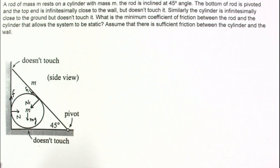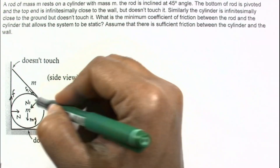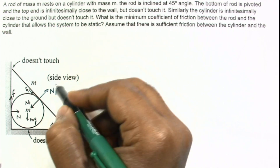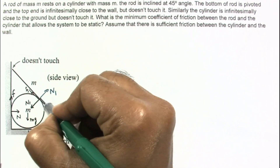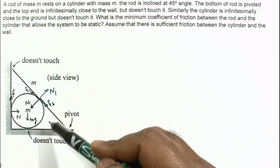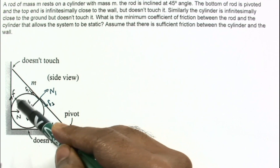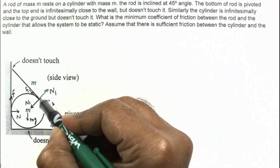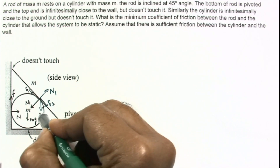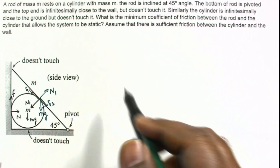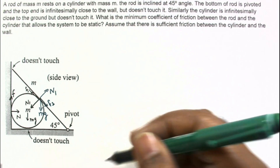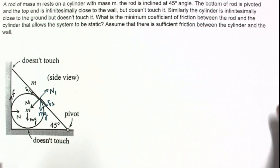Now let us make the free body diagram of the rod. On the rod, the reaction pair gives N1 and F1 at the contact point. From symmetry of the diagram, we can see this is an isosceles right triangle and the cylinder is its incircle. So the contact point should be the midpoint of the rod, and Mg of the rod passes through this midpoint. The masses of both the cylinder and rod are equal, so both have weight Mg.